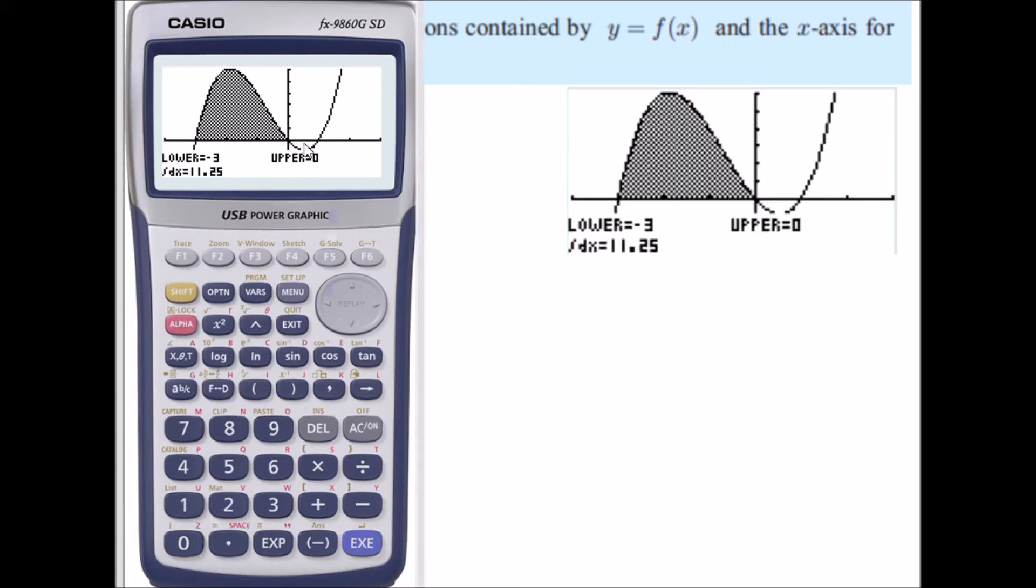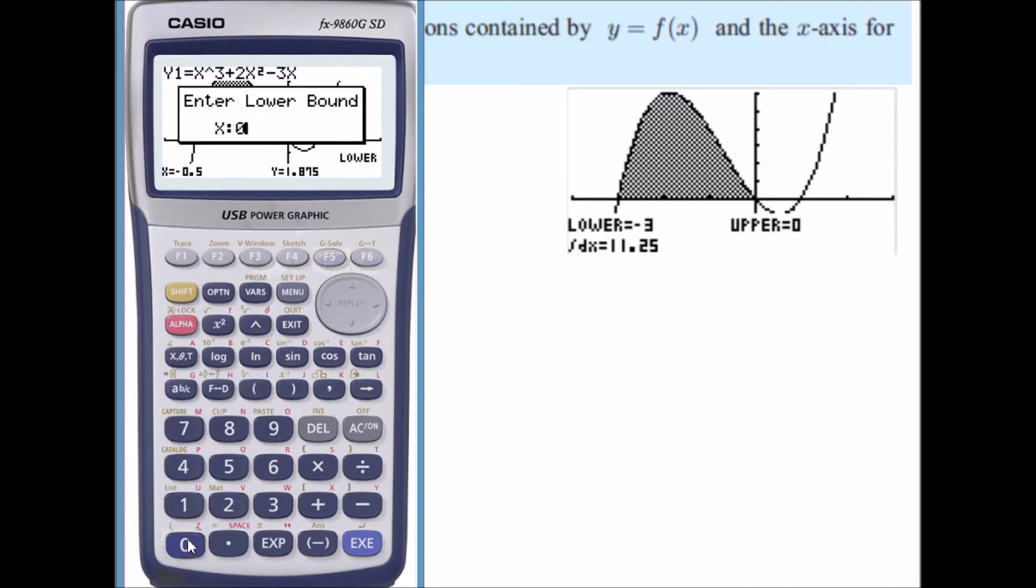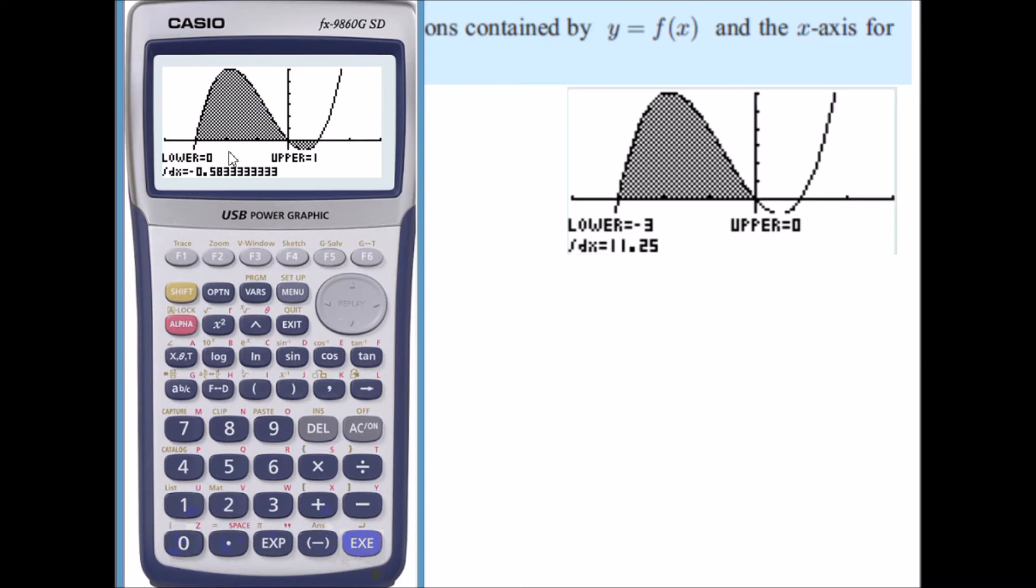Now I'll find this value here between 0 and 1. So once again G-solve, F3 and my lower boundary is 0. Upper boundary is 1. And notice we get a negative for the definite integral as we expect being underneath the x-axis.